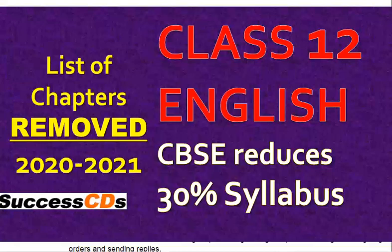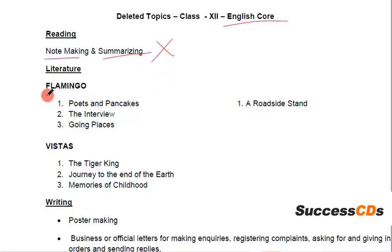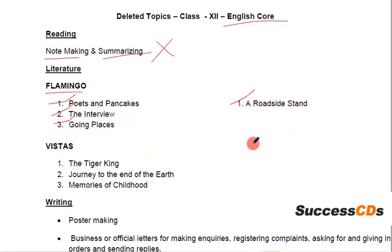First of all, let us see the deleted topics for class 12 from English Core. From the reading section, note-making and summarizing has been deleted — you don't have to prepare this topic. In the literature section, from your Flamingo reader, the chapters deleted are Poets and Pancakes, The Interview, Going Places, and the poem A Roadside Stand. These 4 chapters from the Flamingo book have been deleted and are not in the syllabus.